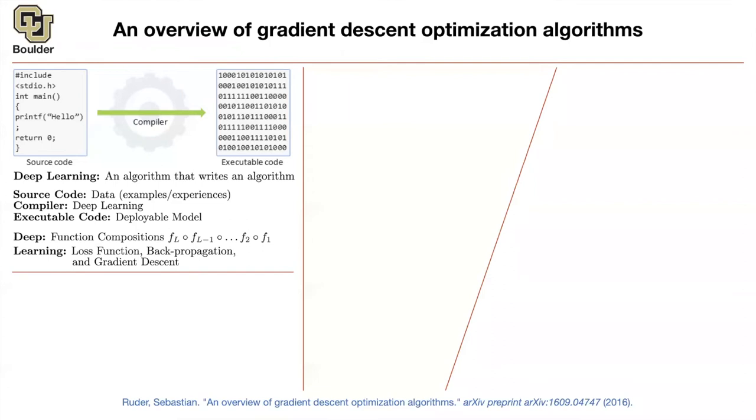So in the end, you're going to have a deployable model that you want to actually deploy in practice. That deployable model needs to run fast.